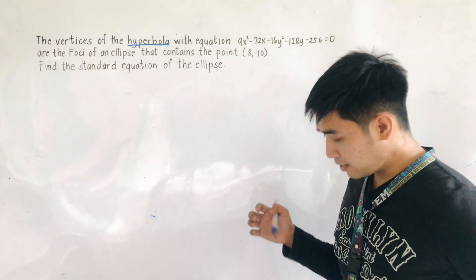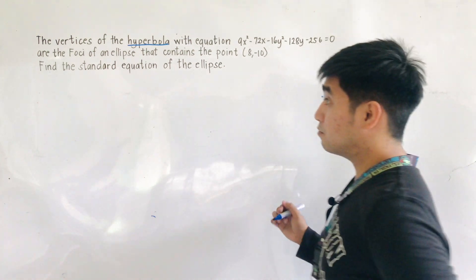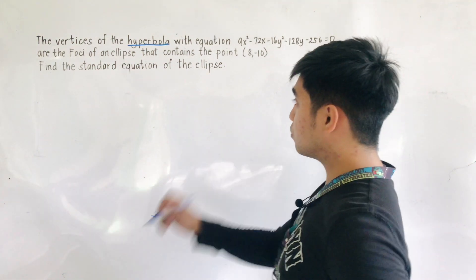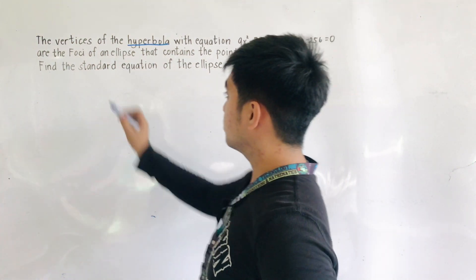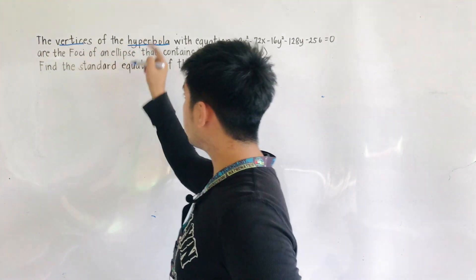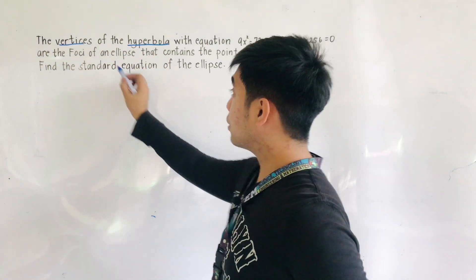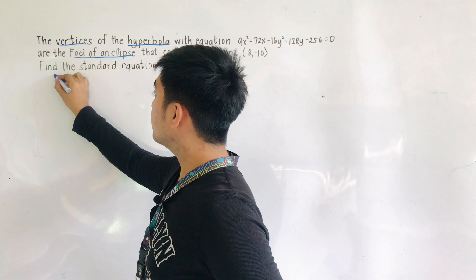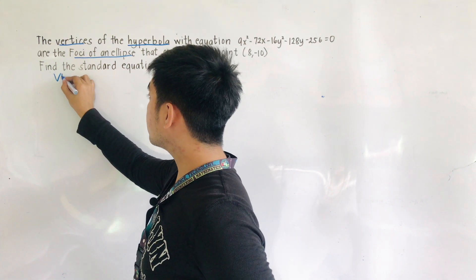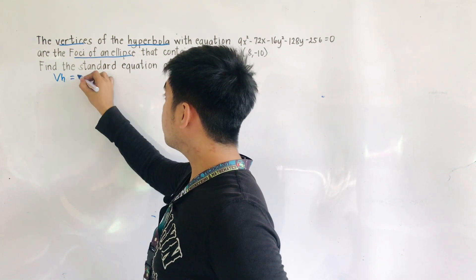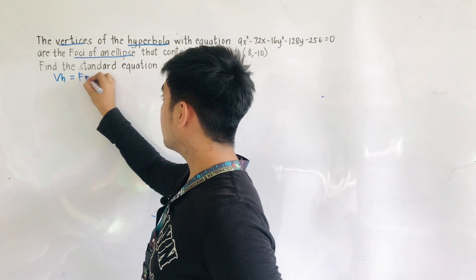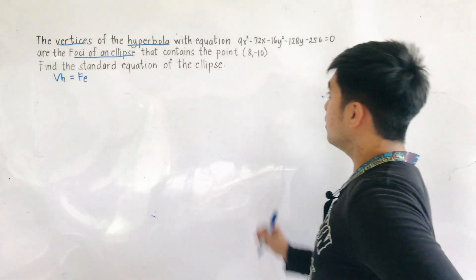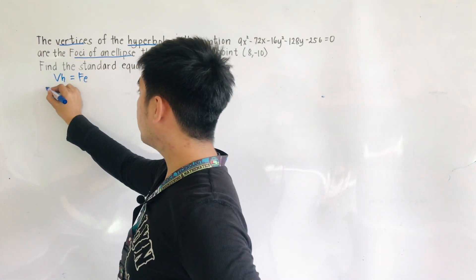If you are given this problem, all we have to do is write the conditions first. We have one condition: the vertices of the hyperbola are the foci of the ellipse. So let's now write the equation of the hyperbola.